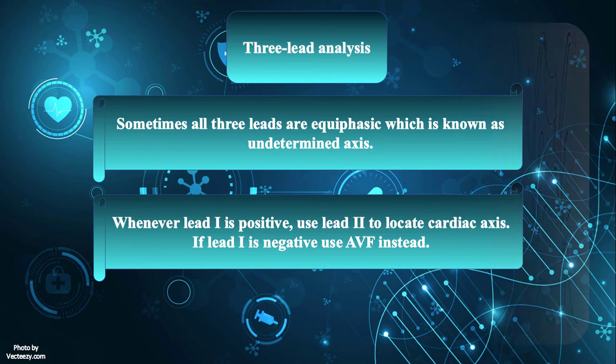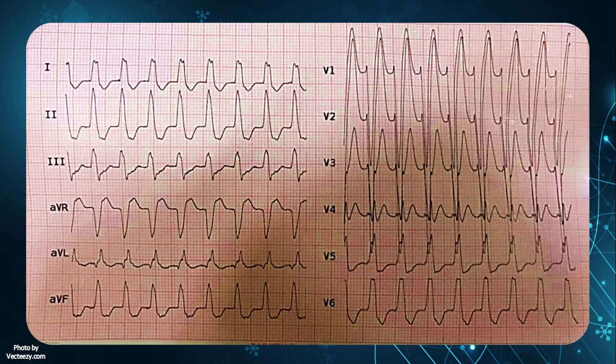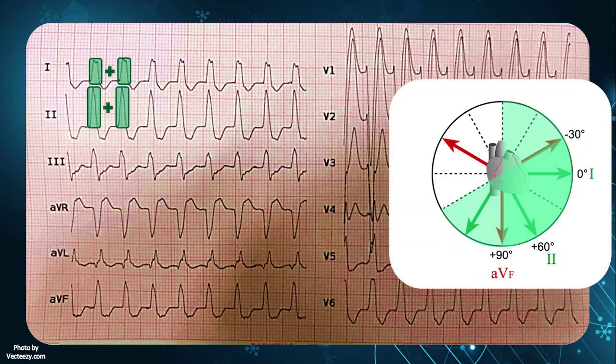In our first example, QRS complexes in both leads 1 and 2 are upright and positive. Therefore, the axis is within normal ranges.